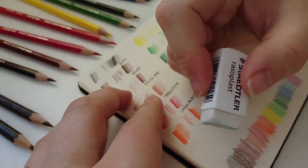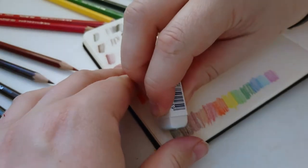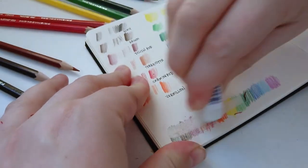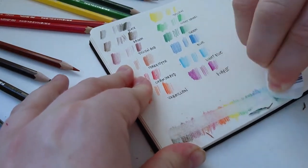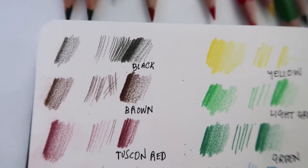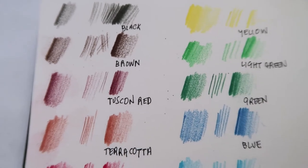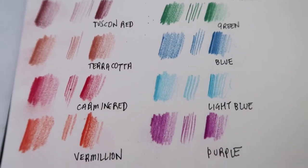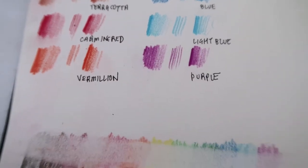And then I'm doing the eraser test because these are erasable coloured pencils. They do erase pretty well, though they're not 100% erasable. I guess nothing is in life. I really love that Tuscan red and the carmine red, and that purple is pretty cool too.